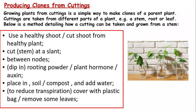Cuttings is a way to create clones of a parent plant — however, this is not natural; humans do this. You choose a healthy shoot and cut a section from the parent plant, cutting the stem at a slant to create a large surface area for the xylem and phloem, and cutting between the nodes. Then dip the end of the stem in rooting powder, plant hormones, or auxin, and place it in soil or compost and add water. You would usually cover them with a plastic bag or remove some leaves to reduce transpiration, because you want the plant to induce roots rather than focus on photosynthesis.